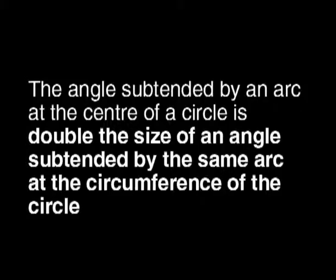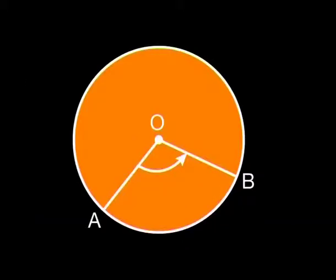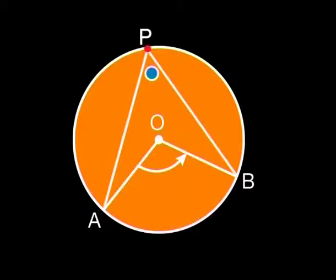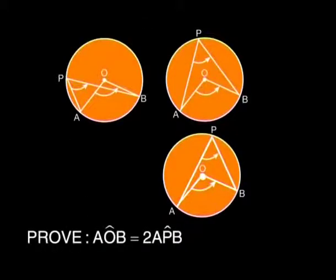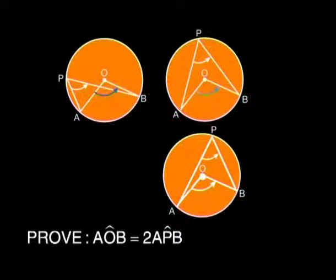Look at the rest of the statement. It says that this angle we've identified is double the size of an angle subtended by the same arc at the circumference. On the diagram, this means we can create an angle APB with P on the circumference, but you must make sure that this new angle is also subtended by the same arc AB. Here are three examples of angles that are all subtended by the same arc AB. It is useful to put two fingers onto A and B, see the arc between them, and then trace the lines to P to see the angle made at the circumference. We can use any of these diagrams in our proof.